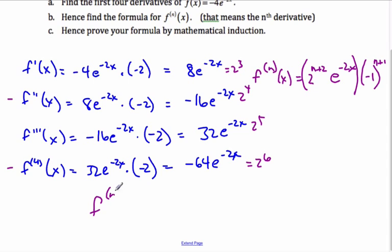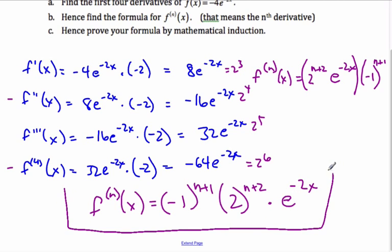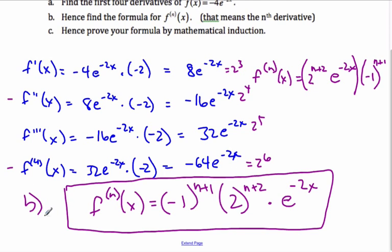The nth derivative of x is equal to negative 1 to the n plus 1, times 2 to the n plus 2, times e to the negative 2x. This is my conjecture for the nth derivative — that is part b.